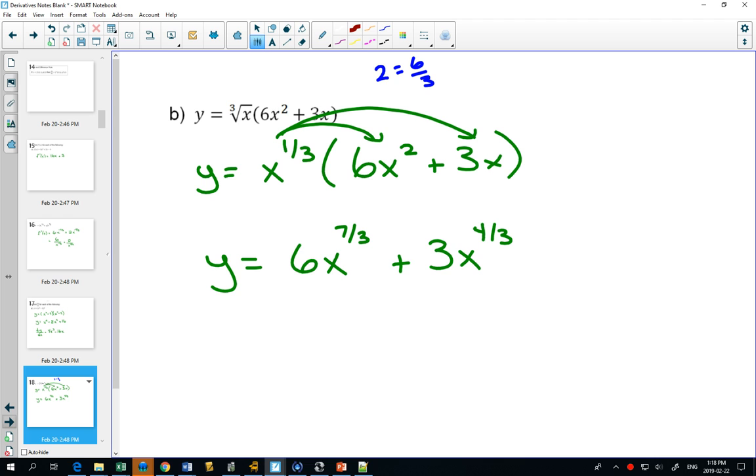Now that I've set it up in a form where I have only the power rule and only adding and subtracting, I can easily do the derivative. 7/3 comes out in front, that'll become 14, subtract 1 from the exponent. 4/3 comes out in front, that'll just become 4, subtract 1 from the exponent. Like I said before, we're going to get really good at subtracting 1.